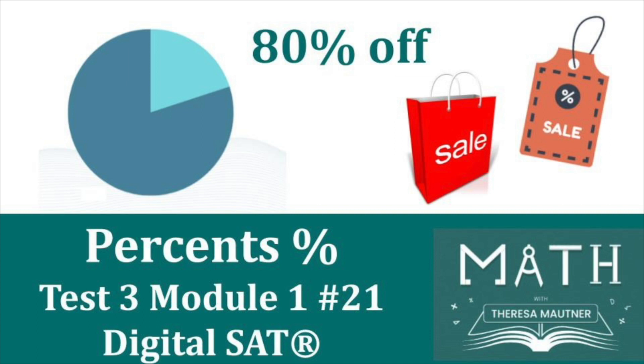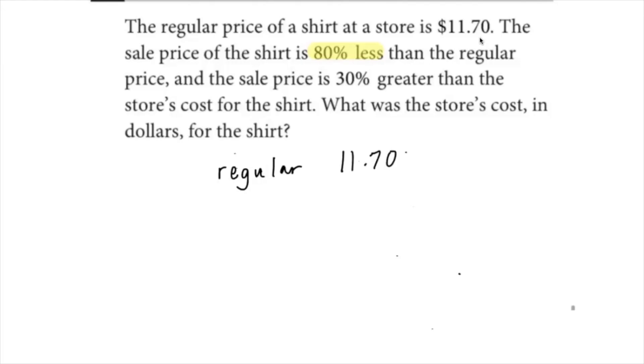This covers Test 3, Module 1, Number 21 of the Digital SAT. The regular price of a shirt at a store is $11.70.